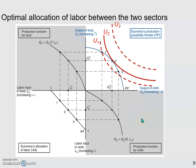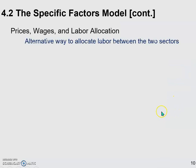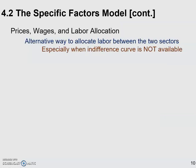This approach looks pretty elegant and accurate. However, we have to remember that to figure this out, we need the indifference curves. As we briefly mentioned in the previous video, the indifference curves in reality are actually pretty hard to find. You probably need to do a lot of surveys of customers to figure out their indifference curves, and sometimes the results could be contradictory. So because of that difficulty, we would consider an alternative way to figure out how to allocate labor between the two sectors.